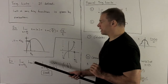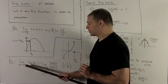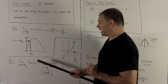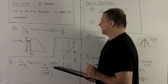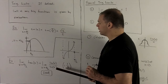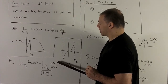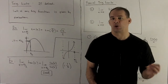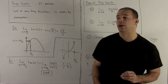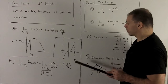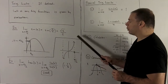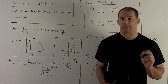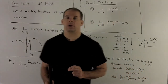For another example, let's take the limit of tan(x) as x goes to π/2. If I try to evaluate, tan(x) is sine(x) over cosine(x). Sine of π/2 gives 1, cosine of π/2 gives 0, so this does not exist because we're dividing by zero. Looking at the graph, we see a vertical asymptote at π/2 — vertical asymptotes are not going to be a good thing when you're trying to take a limit.